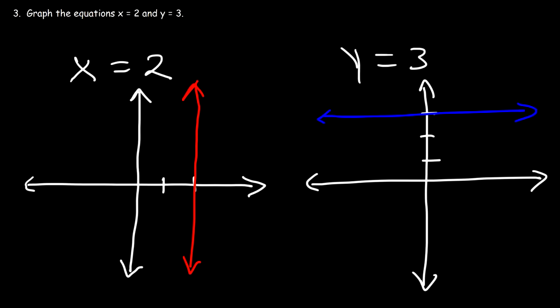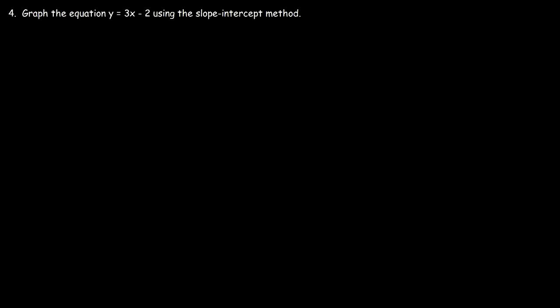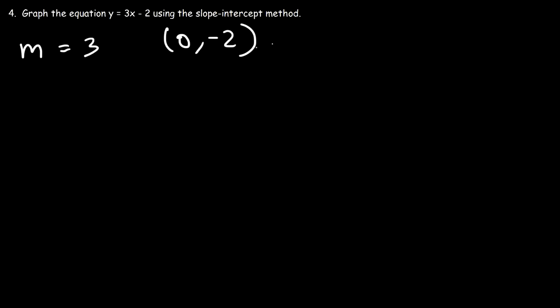Number four: graph the equation using the slope-intercept method. We have y equals 3x minus 2. The slope is equal to 3 and the y-intercept is negative 2, so we have the point (0, -2).